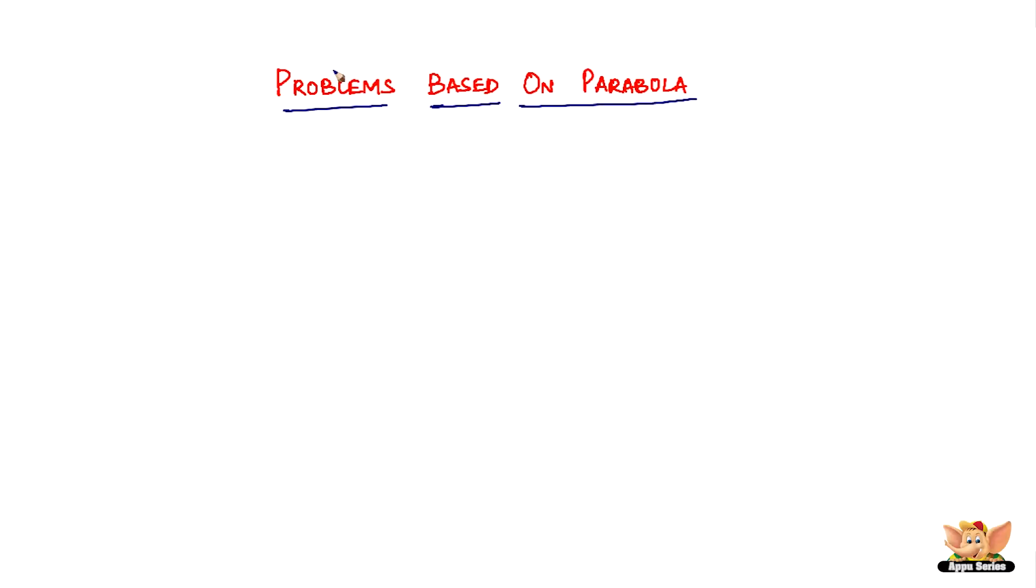In this video, let's continue to solve more problems based on parabola. Here we have a question: Find the equation of a parabola whose vertex is (0,0) and